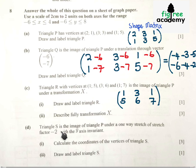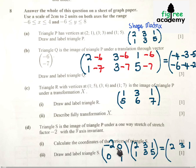Let's go on part D. Triangle S is the image of triangle P under one-way stretch of stretch factor minus 2 with Y axis invariant. This means Y is not going to change, so it's a movement along X axis. This minus 2 showing that only the values of X are going to move and Y is invariant. Then we multiply with the original shape matrix, so that we multiply with the stretch matrix.